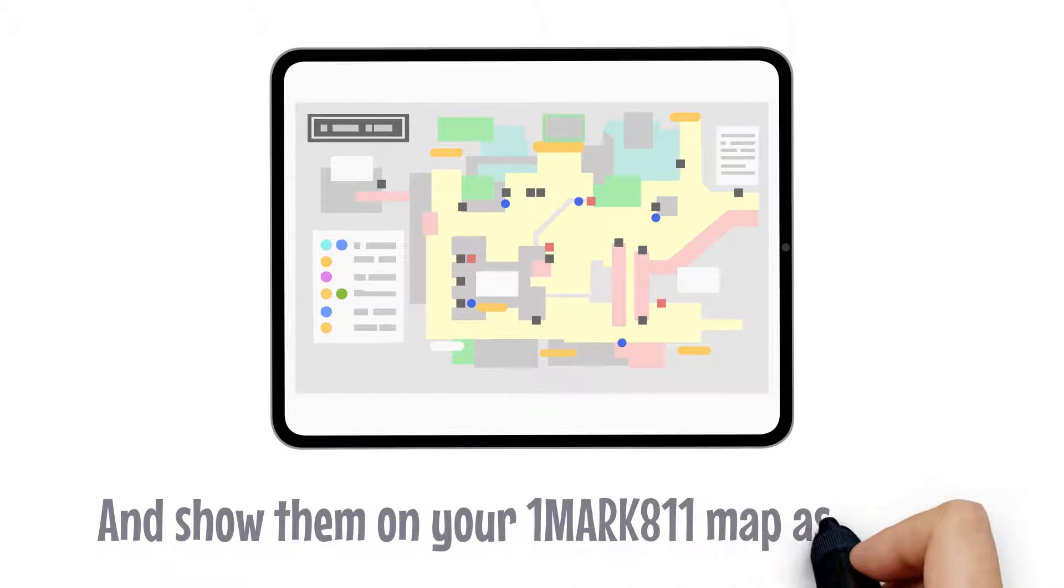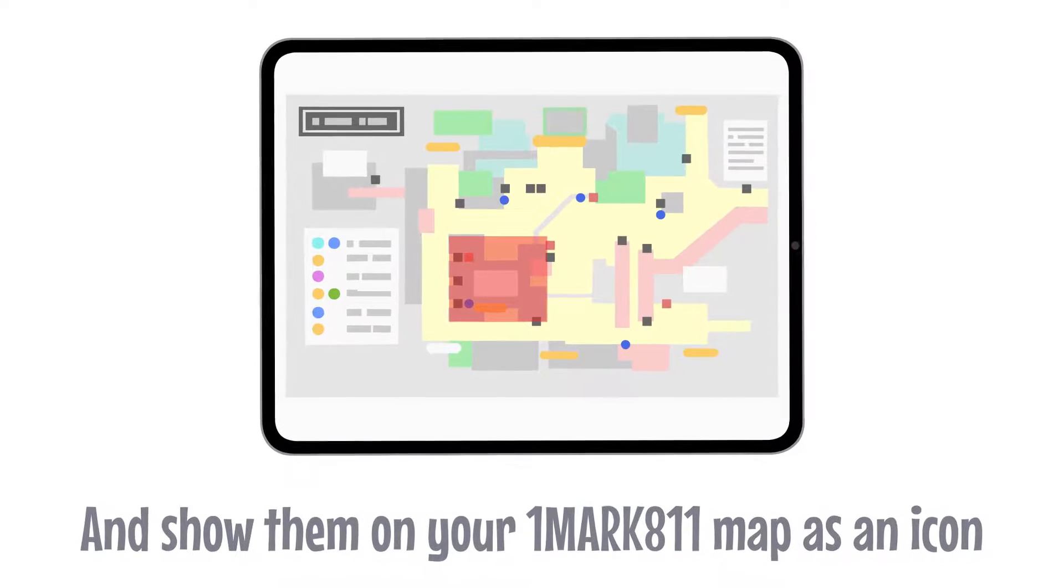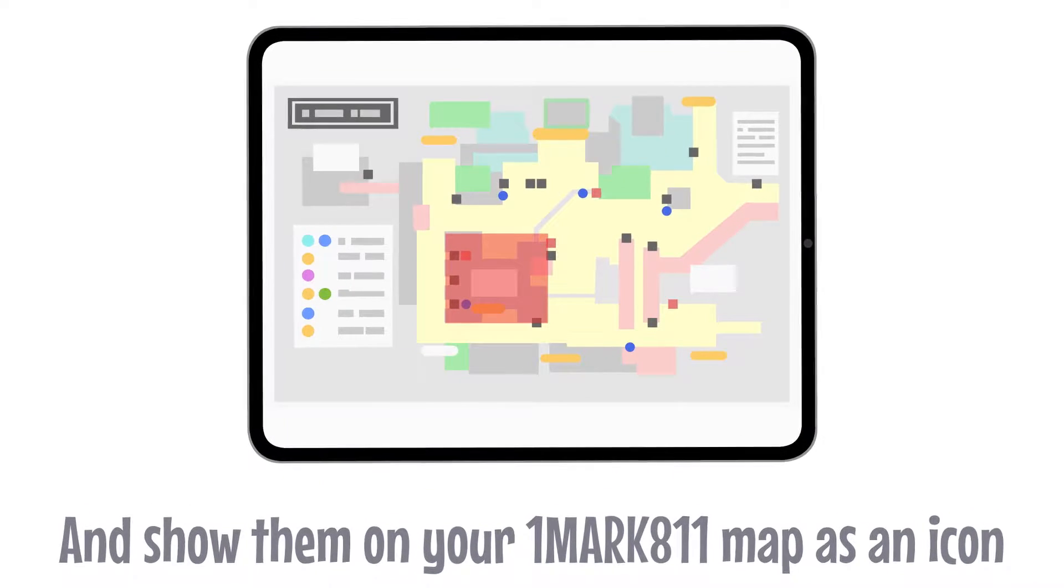And show them on your OneMark 811 map as an icon that can be clicked on. When the icon is clicked, the measurement or drawing associated with that location is served up on the screen for immediate use in marking the facility.